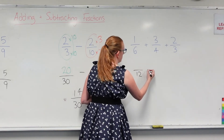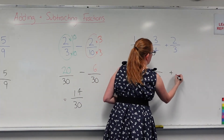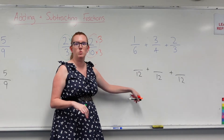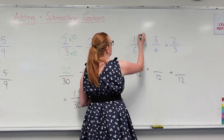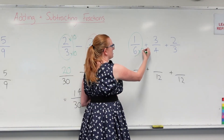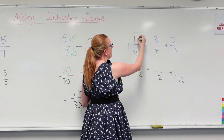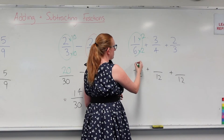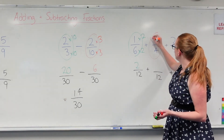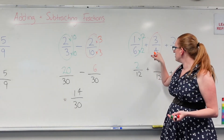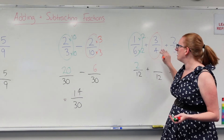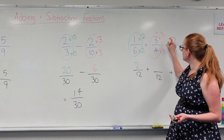So I want this to have a denominator of 12, and this one, and this one. For the first fraction, it's got a denominator of 6. How do I turn 6 into 12? Times it by 2. So if I'm timesing the bottom by 2, I'm timesing the top by 2 as well. So 1 times 2 is 2. Now the next one has a denominator of 4. How do I turn 4 into 12? I times it by 3. So if I'm timesing the bottom by 3, I'm also timesing the top by 3. So 3 times 3 is 9.